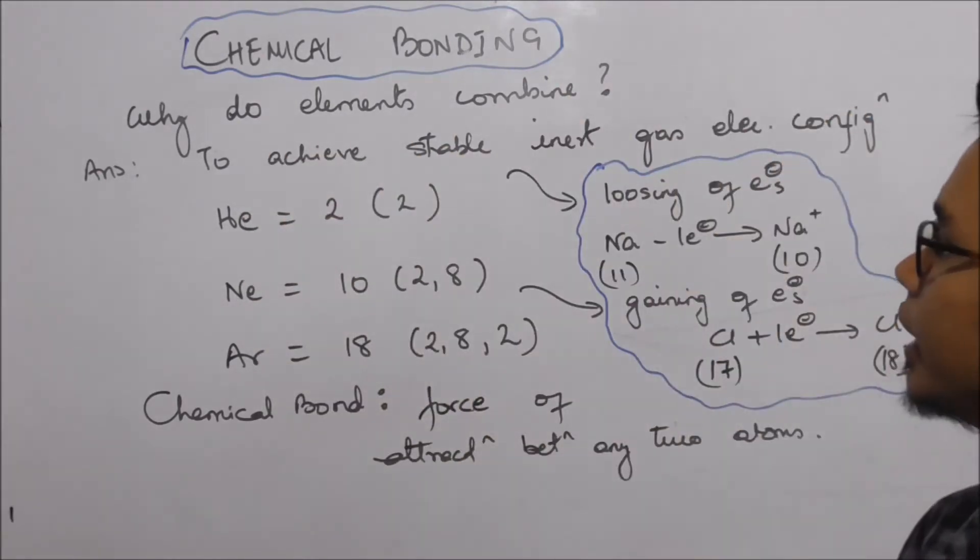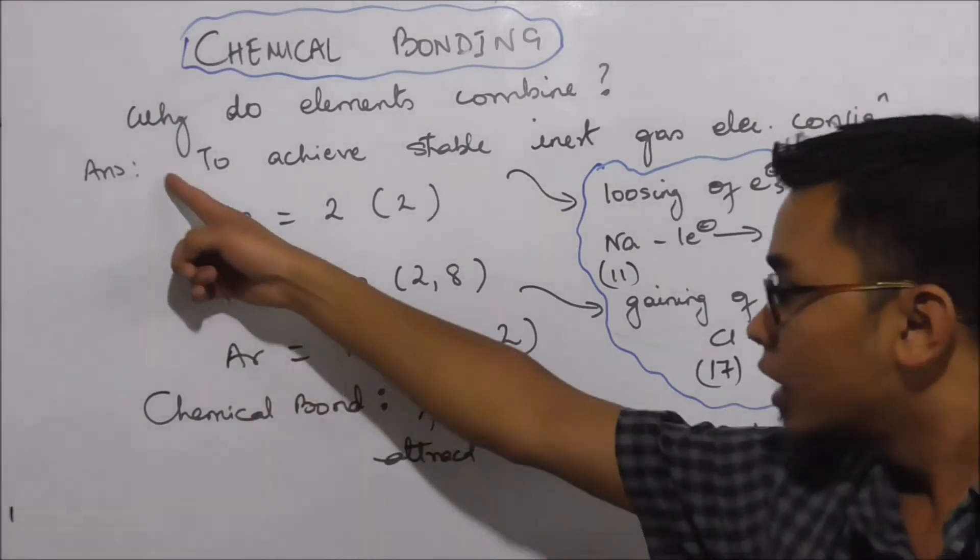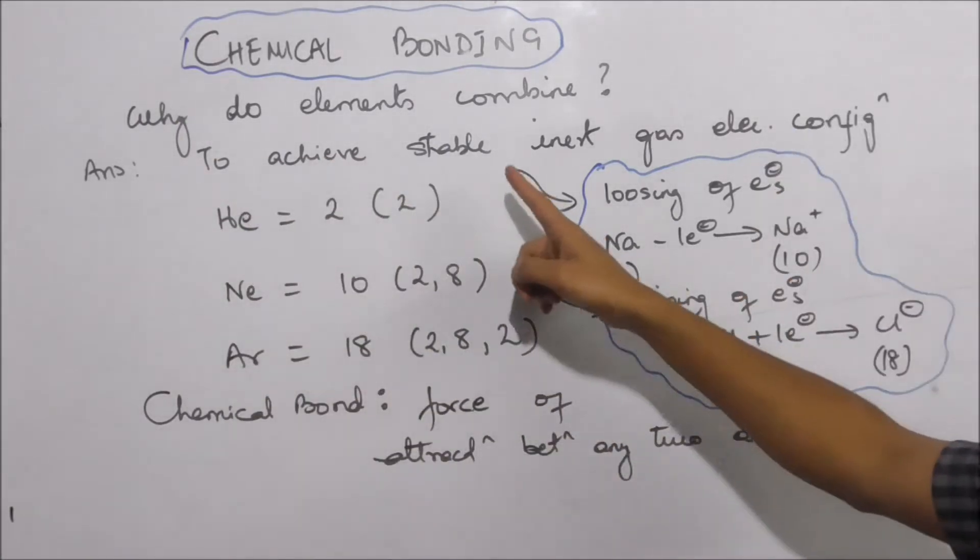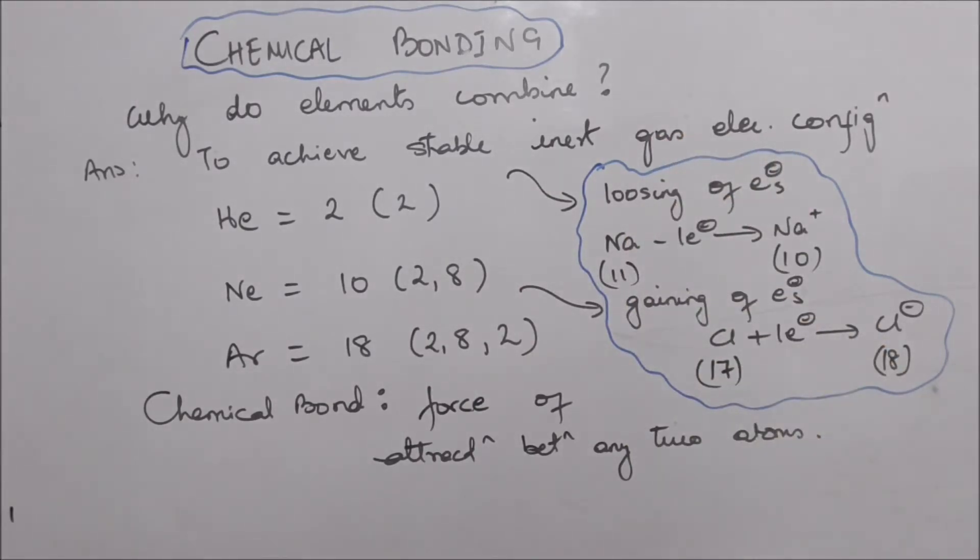Why do elements combine? The answer is: to achieve stable inert gas electronic configuration.